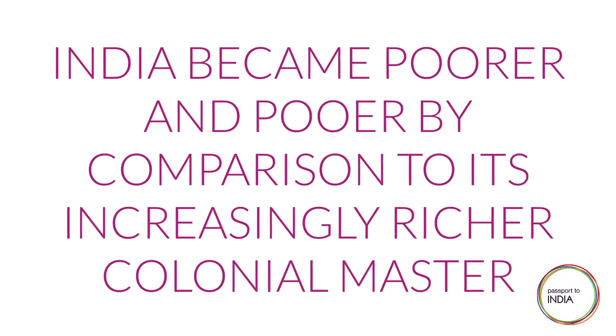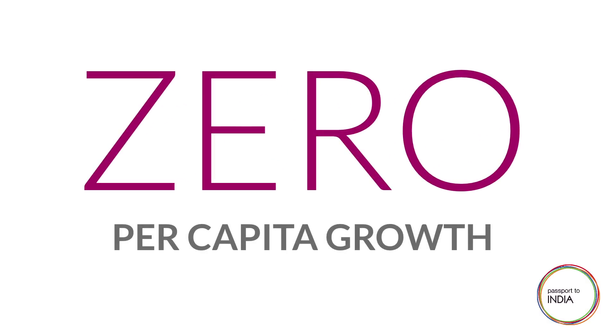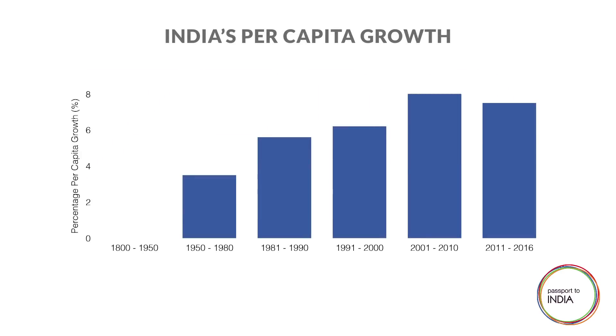India became poorer and poorer by comparison to its increasingly richer and richer colonial master. The most shocking consequence of the poverty and the uprooting of local institutions and practices were the famines, several of them claiming millions of lives. And over the period of British rule, tens of millions — maybe 30 million Indians — died as a result of these famines. The last one of which was the Great Bengal Famine of 1943 in the middle of the Second World War. Using data from Angus Maddison and the World Bank, you can see that per capita growth, when you factor in population growth, from 1800 to 1950 in India was effectively zero. This captures the end of the colonial period, the time when India was now a very poor country by comparison to many other places in the world, not least Britain.